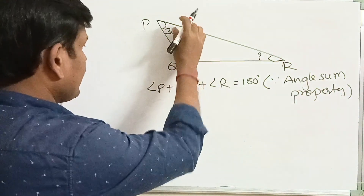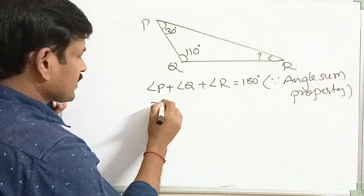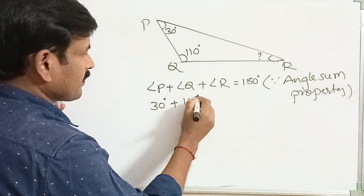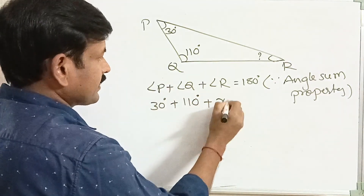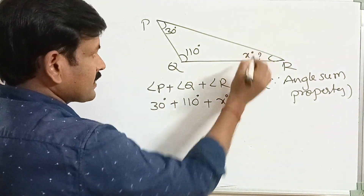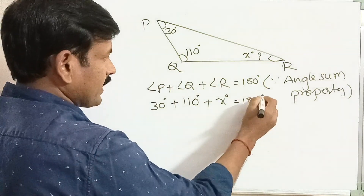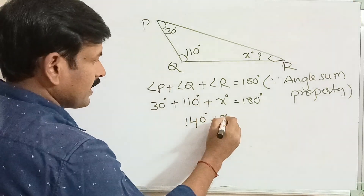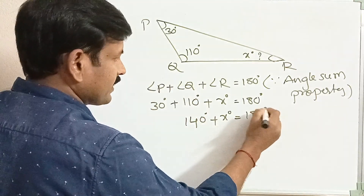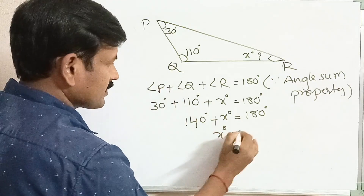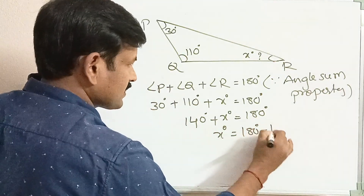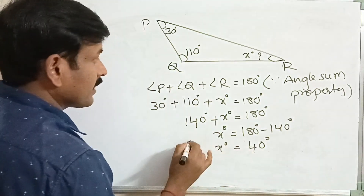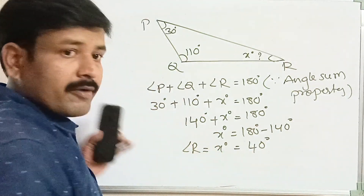Substituting the given values: 30 degrees plus 110 degrees plus x degrees equals 180 degrees, where angle R is x degrees. Now, 110 plus 30 is 140 degrees, so 140 plus x equals 180 degrees. Then x degrees equals 180 minus 140, which is equal to 40 degrees. Therefore, angle R equals 40 degrees.